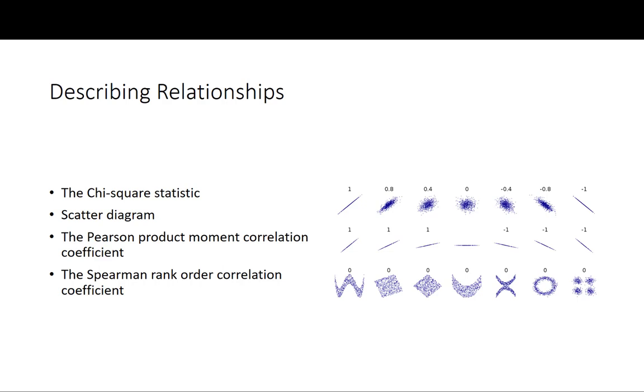Hi everyone, this is the second of the videos dealing with testing for associations. In this video I am going to talk about the chi-square statistic and how to show relationships between variables in scatter diagrams.